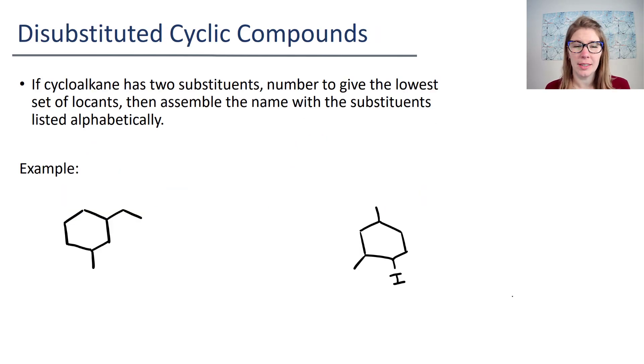Let's move into disubstituted cyclic compounds. So this will also work for trisubstituted as well. But if you have two or more substituents on the ring, you have to again number to give the lowest set of locants. And then when you're assembling the name, you list those substituents alphabetically.